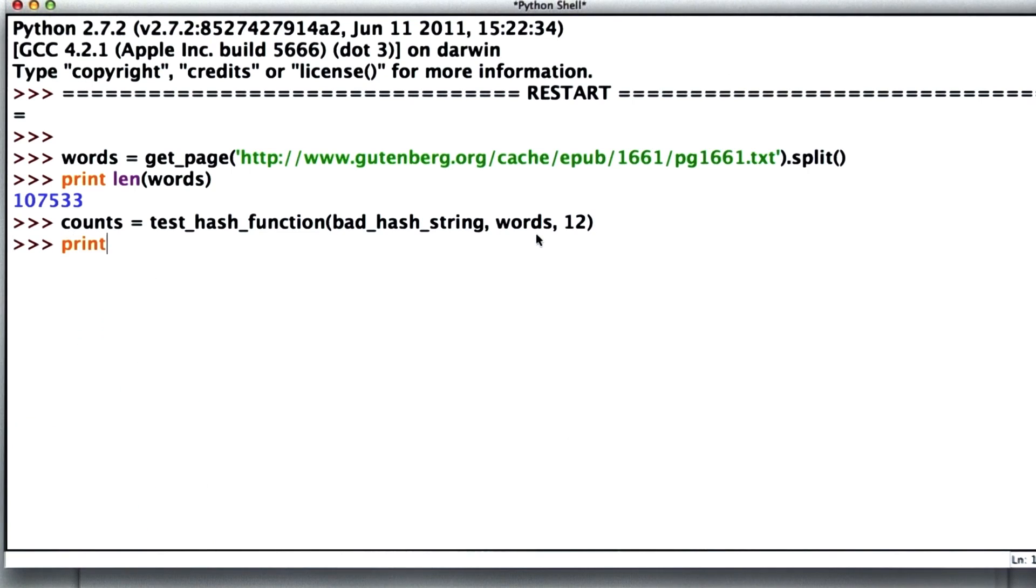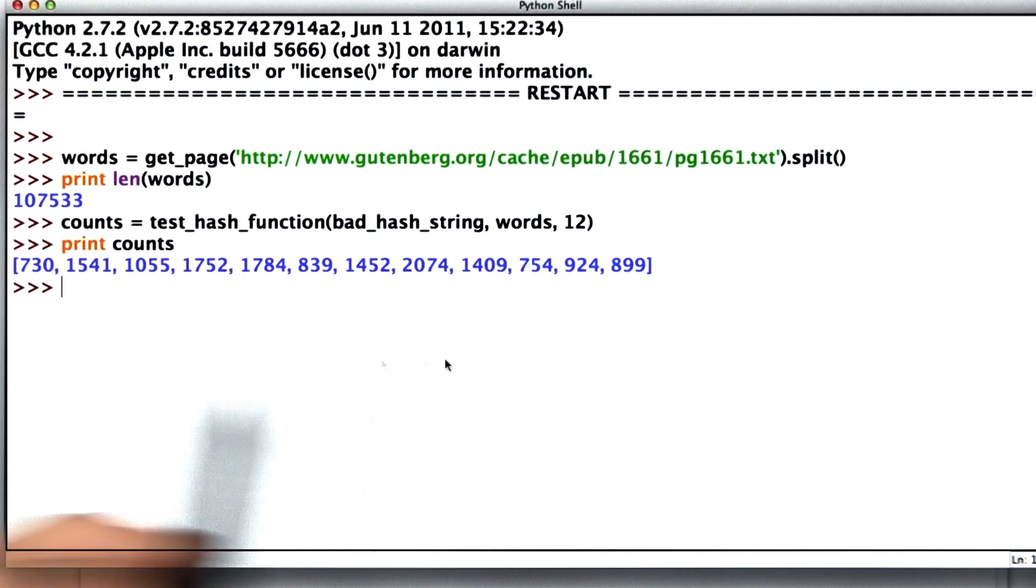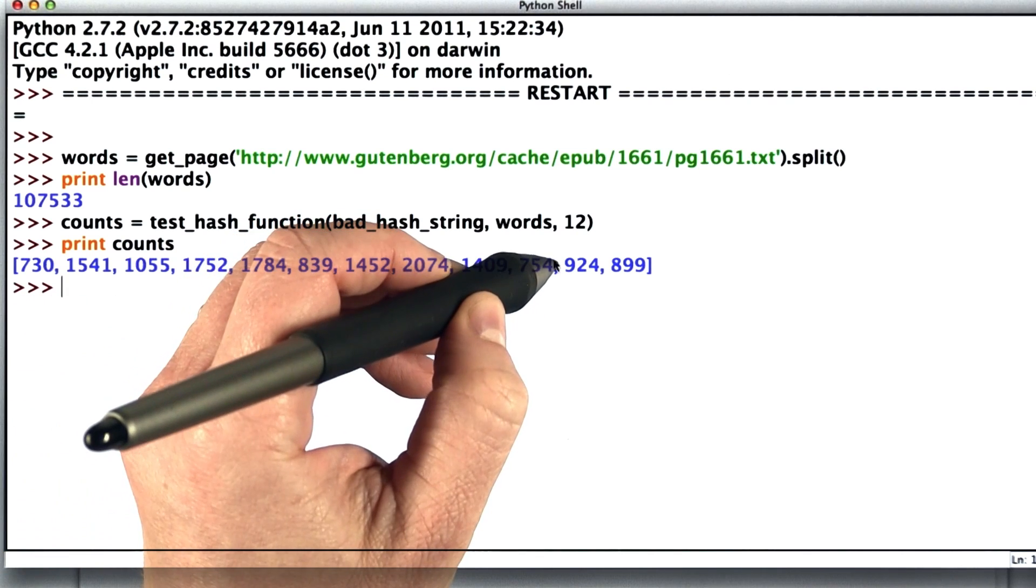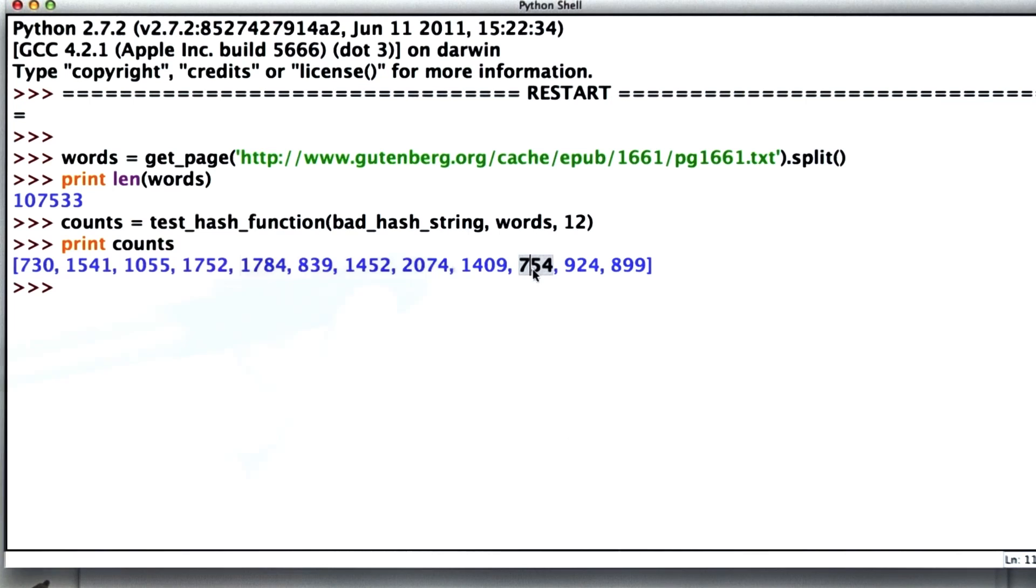Let's look at what the counts are. And you can see we've got 12 entries, which corresponds to the number of buckets. And they vary quite a bit. The smallest one has only 754 elements. The largest one has over 2,000. So the gap between the smallest and the largest is nearly a factor of 3.